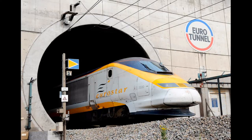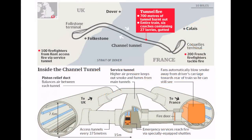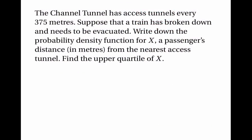One more example about the Channel Tunnel. Since the Channel Tunnel was built, there have been three major fires in one of the tunnels, all involving trains carrying heavy goods vehicles. Because of the possibility of fire, the tunnels are equipped with access tunnels through which people can escape. The access tunnels are spaced 375 metres apart along the Channel Tunnel. Suppose a train has broken down and needs to be evacuated — let's write down the probability density function for x, a passenger's distance in metres from the nearest access tunnel, and find the upper quartile for x.